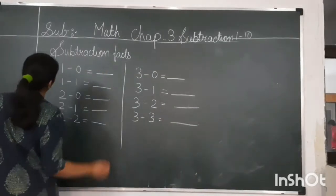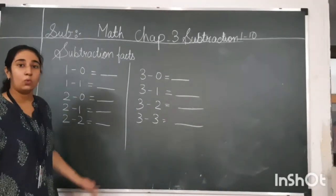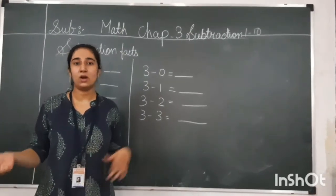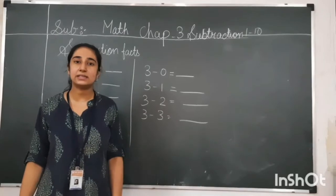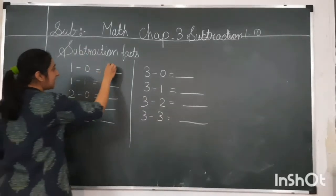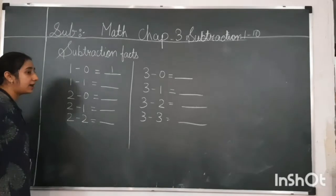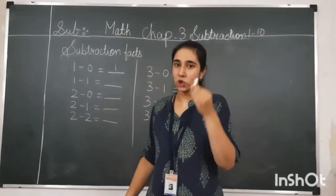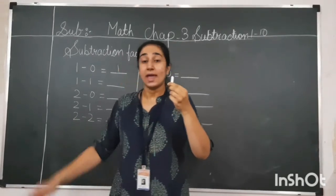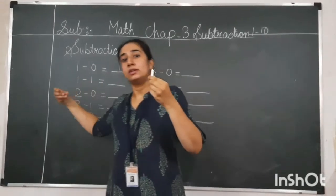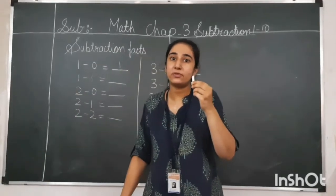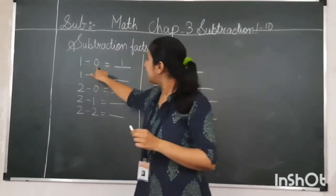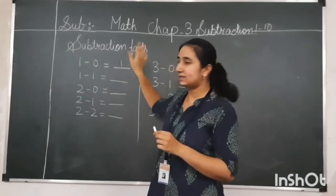Now have a look here: 1 minus 0. What will be the answer? When we subtract 0 from 1, we get the number itself as an answer. That means 1. For example, if you are having one chalk and no one is taking that chalk from you, how many chalks will be left? That one only. Nothing goes away from you, so the answer will be 1.